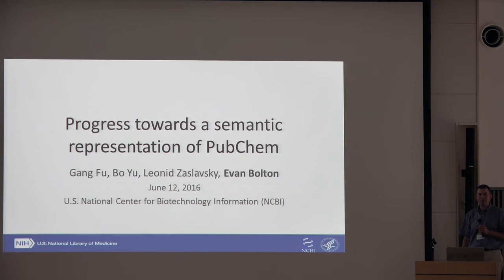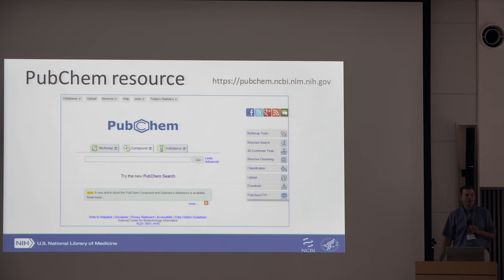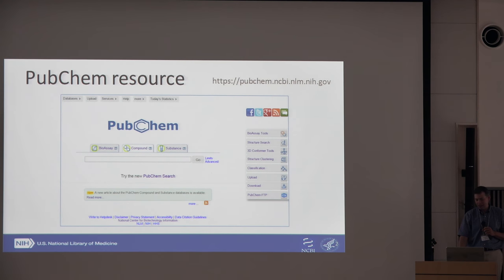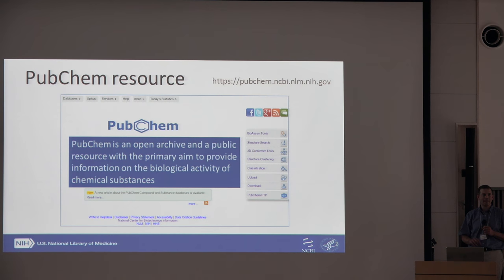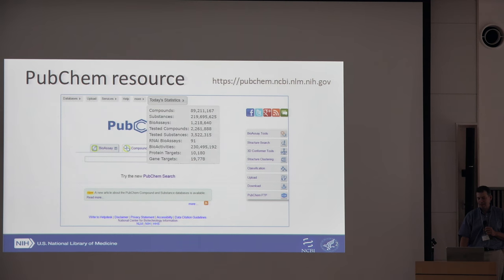Today I'll talk about PubChem and how we're progressing towards a semantic representation. Hopefully everybody knows what PubChem is, but PubChem is a resource at NCBI. We're basically an open archive where you can take your chemical substance information, its links to other types of domains and entities, as well as the biological activities that are associated to it. PubChem contains a lot of data, and we link to a large number of domains that are important to you.